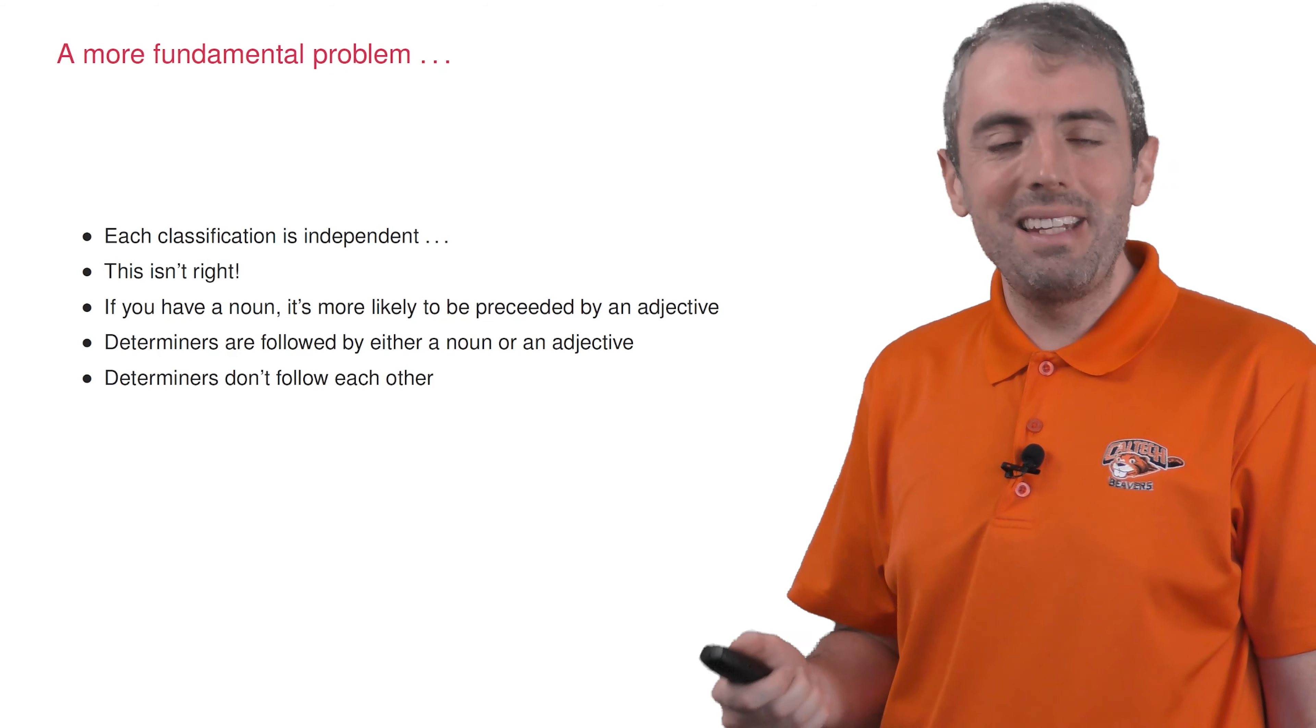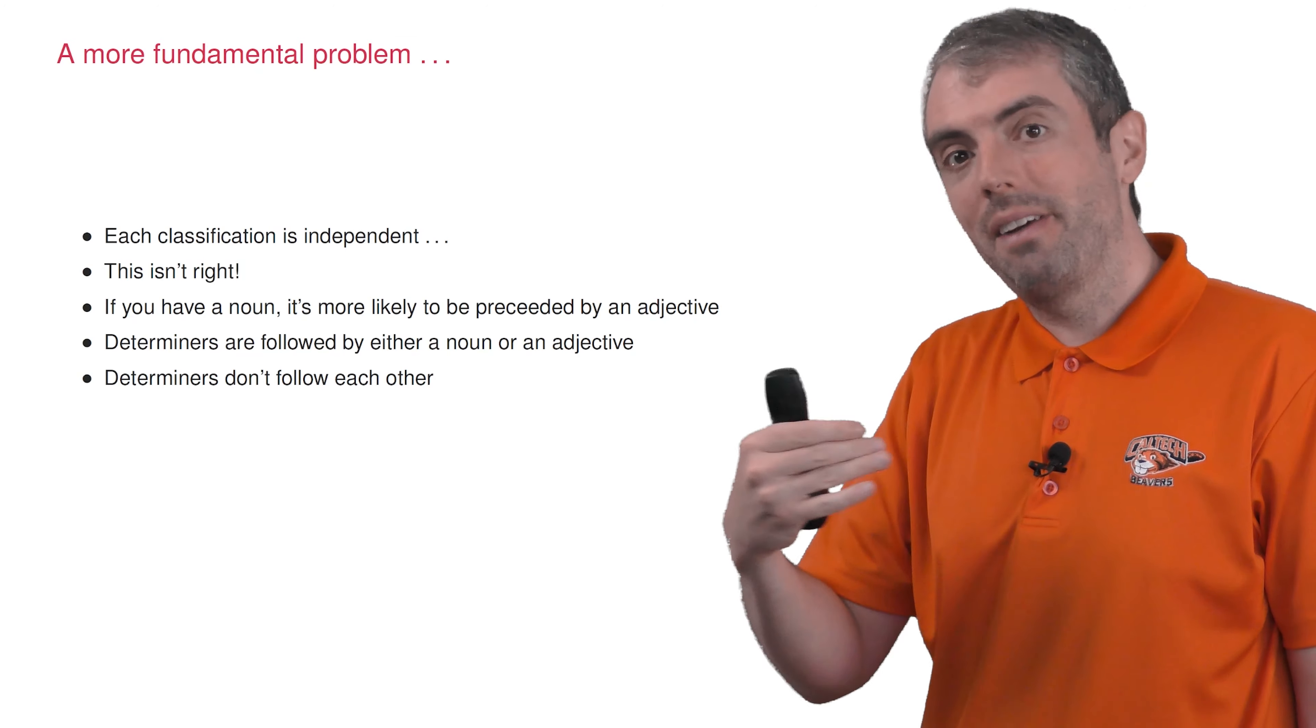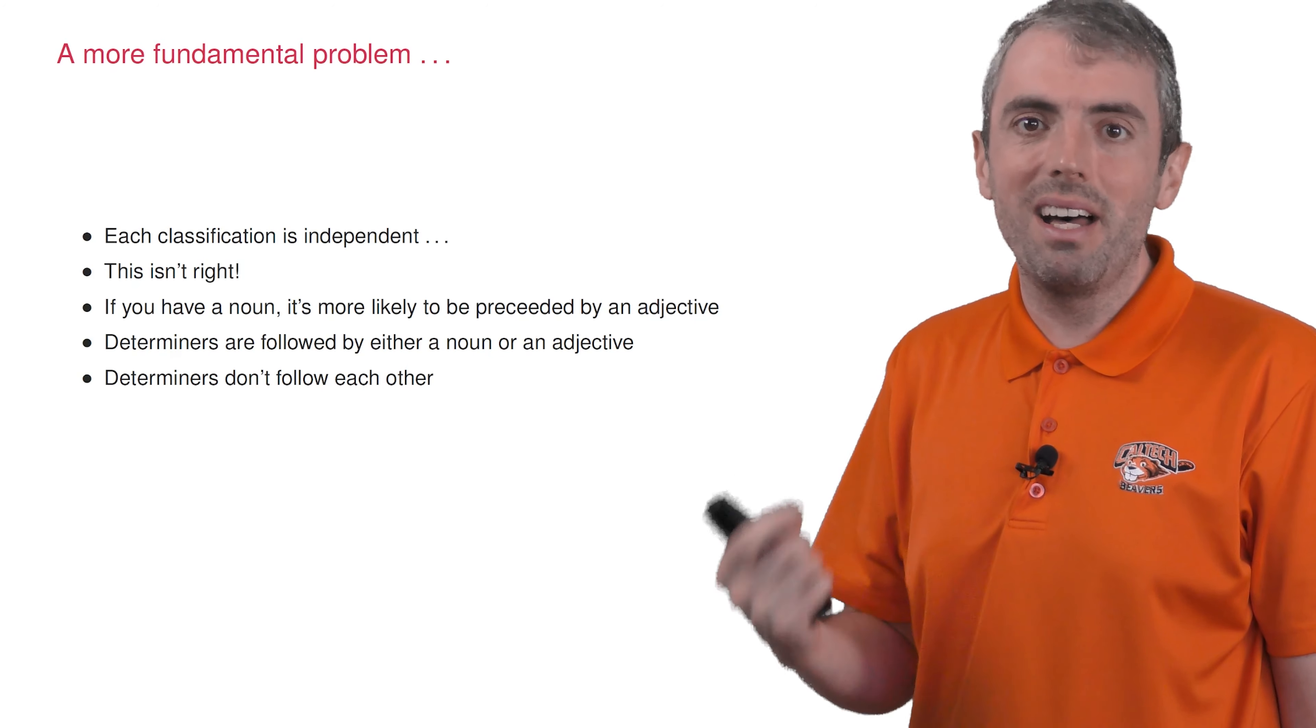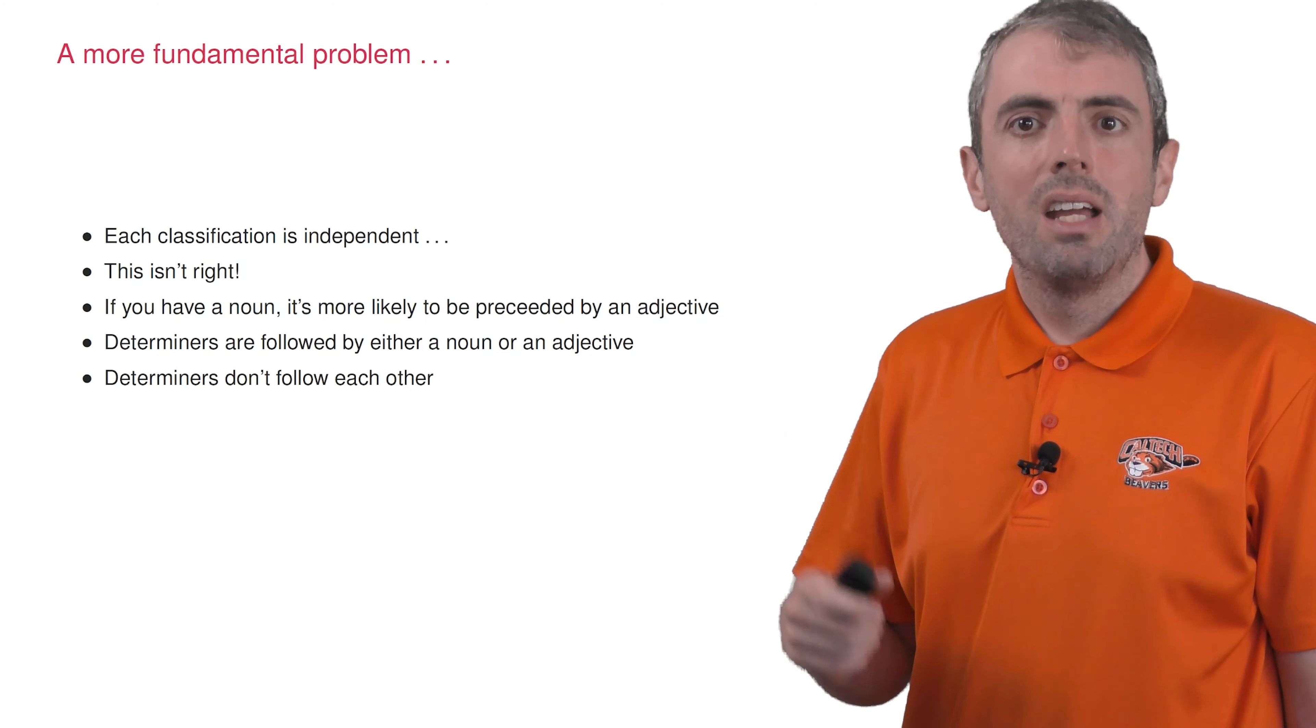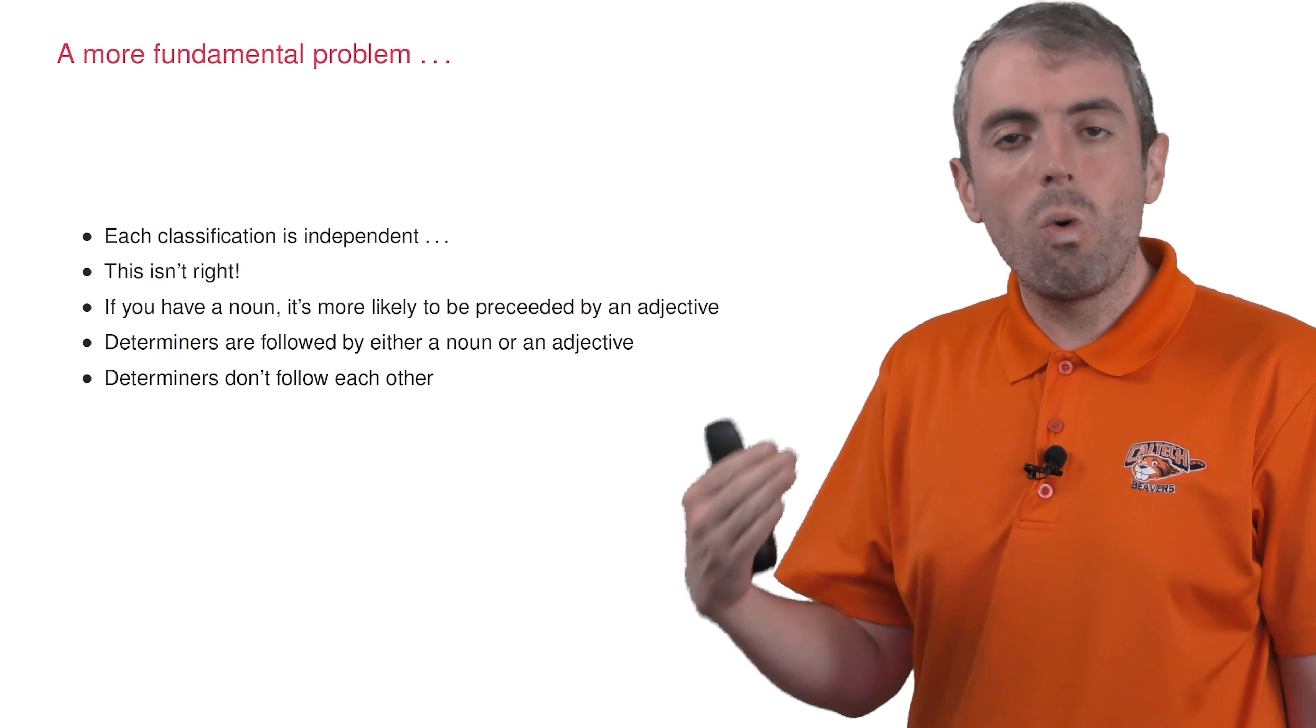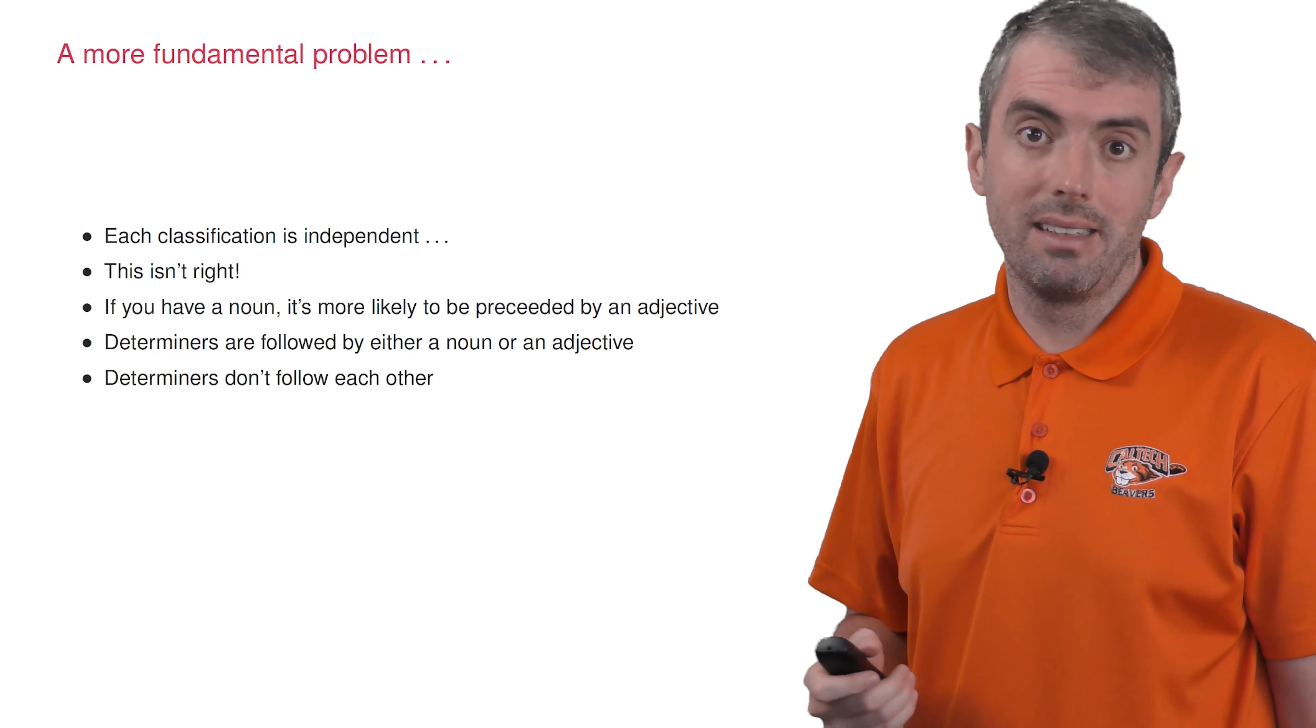The problem is we're approaching the problem totally wrong. This problem is not independent. But if you do it as a simple, straightforward classifier, it treats every word label as being independent of every other word. But the part of speech of one word determines the part of speech of the next word. If I begin a sentence with the and ask you what the part of speech of the next word is going to be, you know it's going to be an adjective or a noun. It ain't going to be another determiner or a verb. And that's without knowing even what the next word actually is.